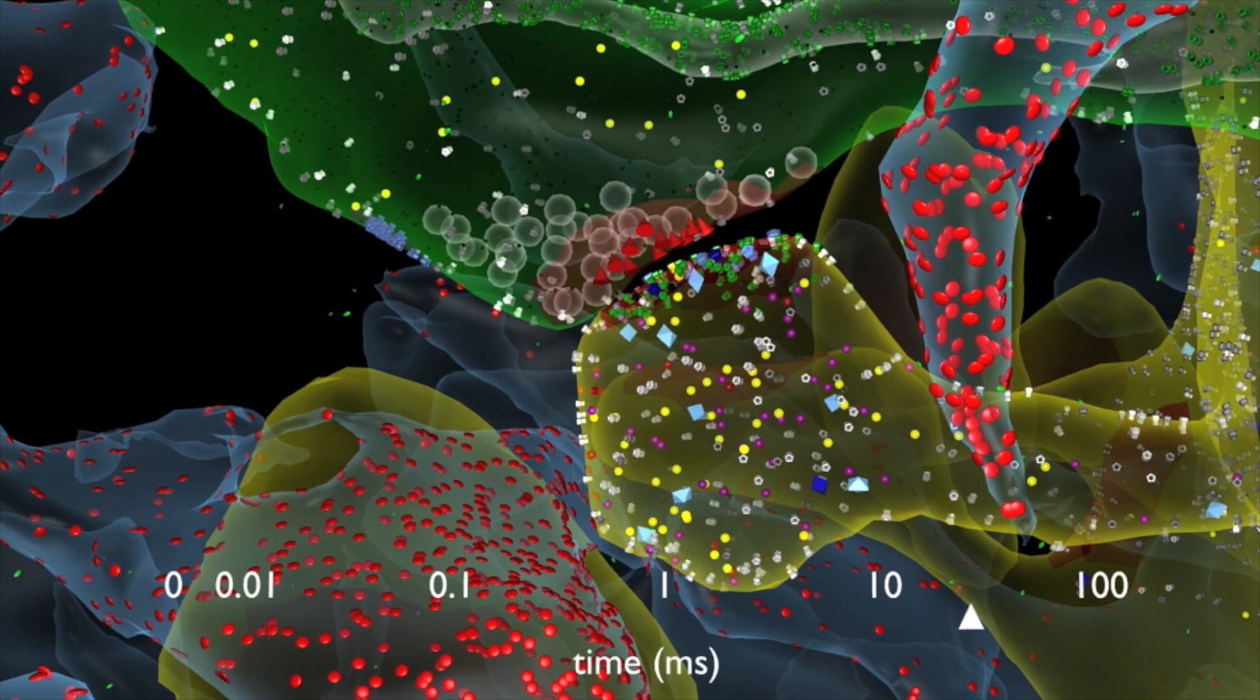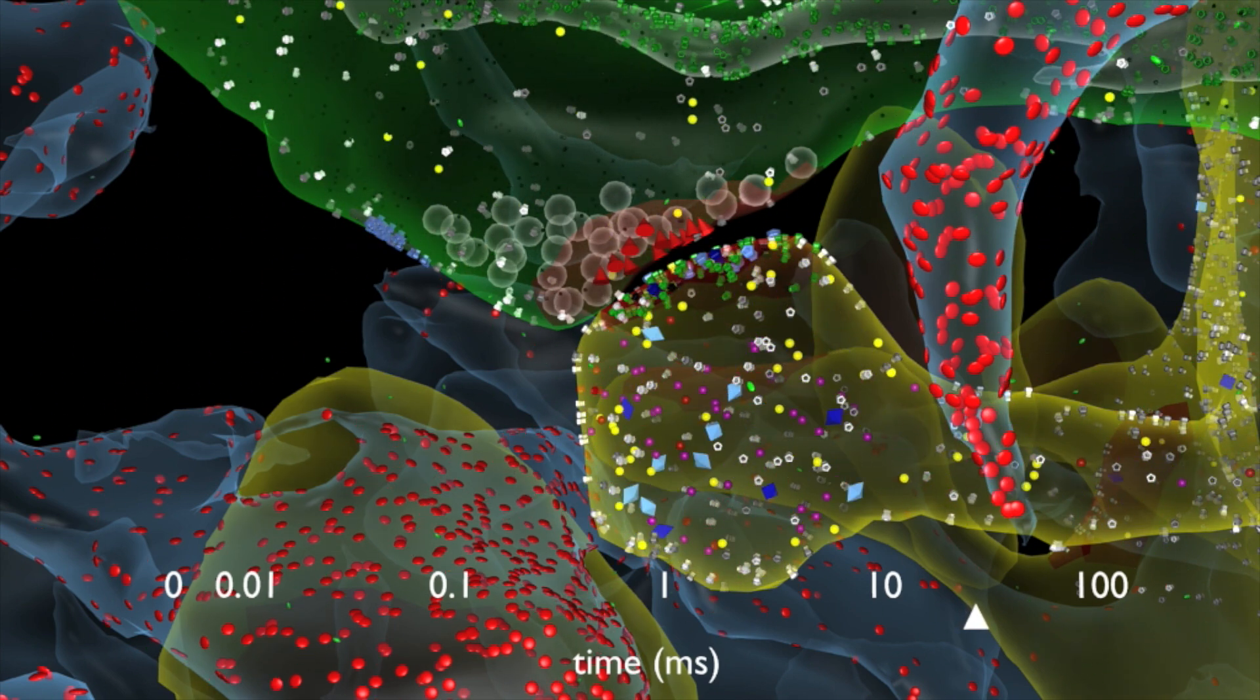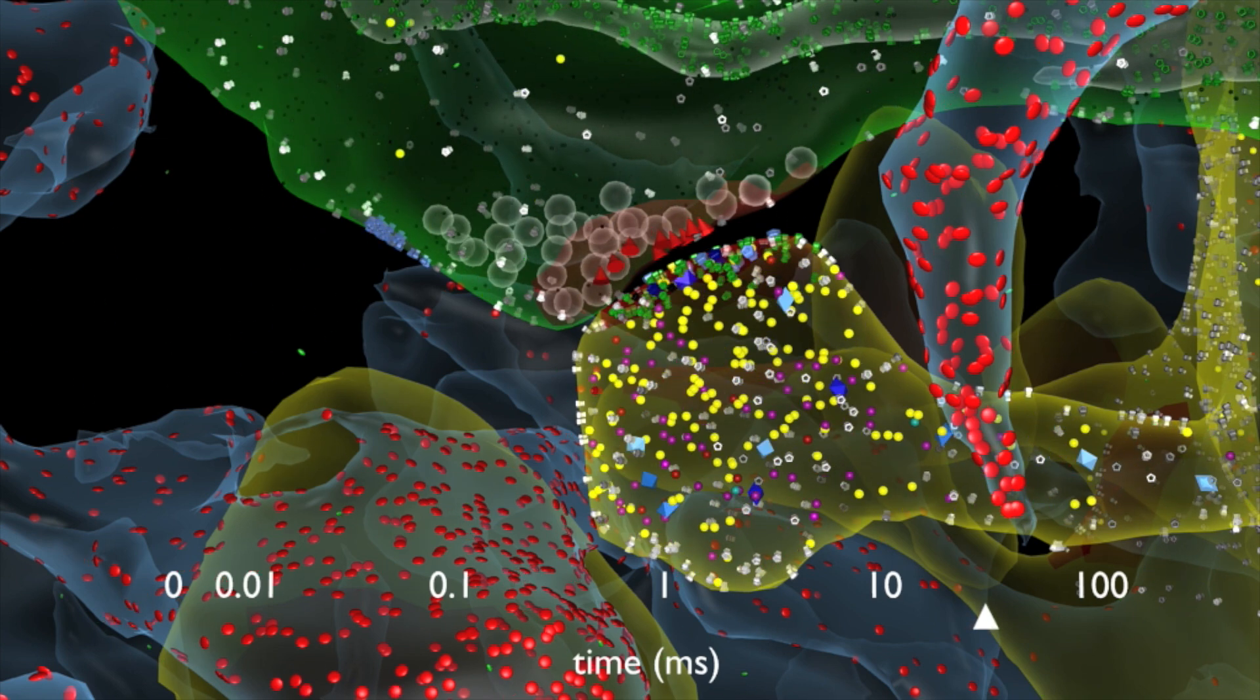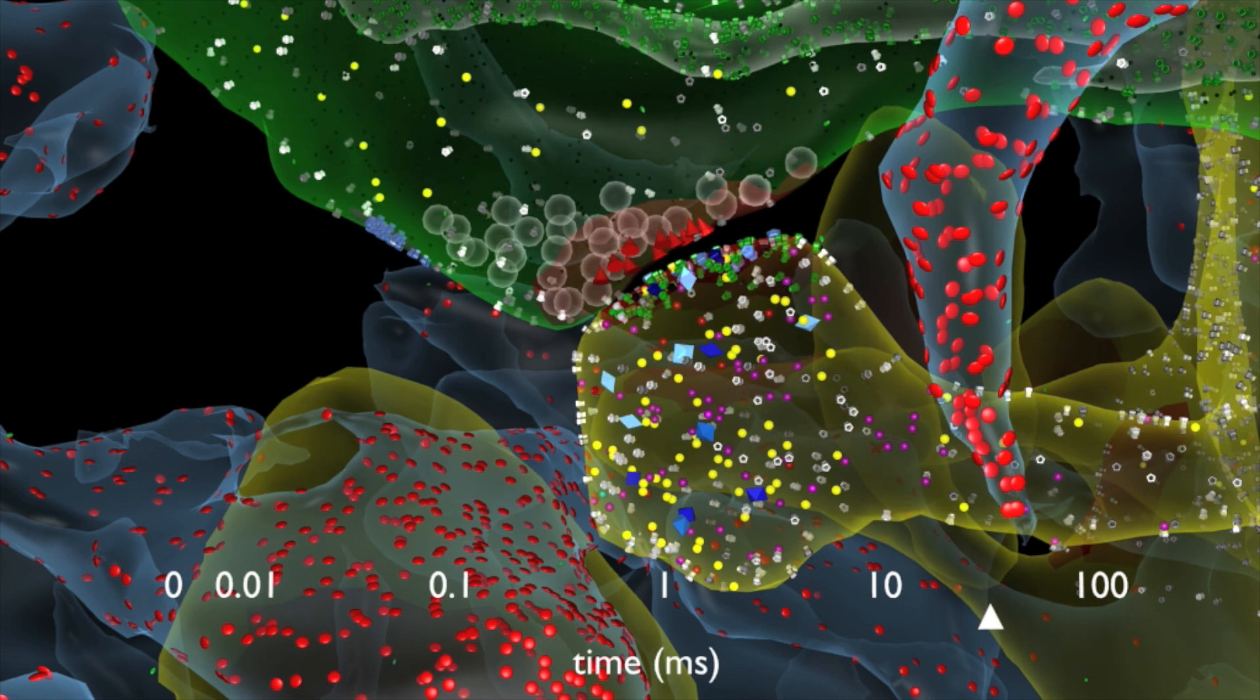If the timing and coordination of the signaling between the axon and dendrite is just right, this could lead to strengthening of the synaptic connection, making successful communication more likely in the future.